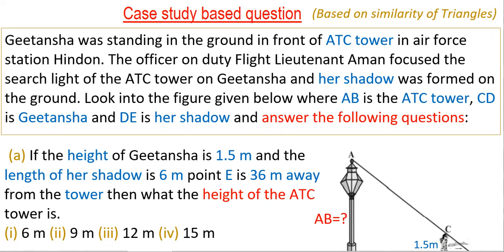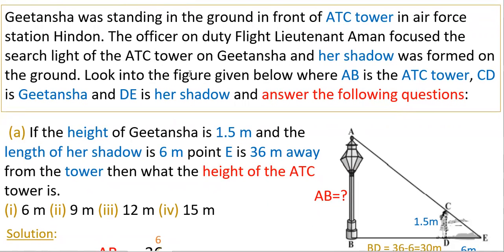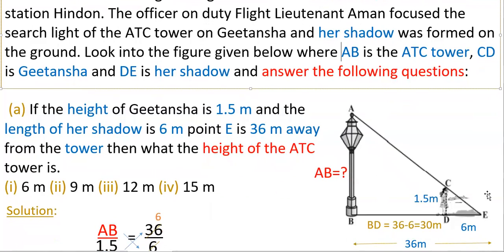Here no values are given in the comprehension passage — only the figure details are useful. AB is the ATC tower as labeled, and you have to observe the figure very well. The first question is: if the height of Geetan Shah is 1.5 meters, the length of her shadow is 6 meters, and point E is 36 meters away from the tower, then what is the height of the ATC tower? Four options are given. From the figure, AB is the tower and CD is the height of Geetan Shah at 1.5 meters.